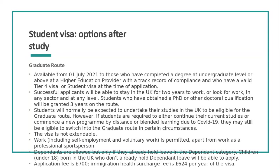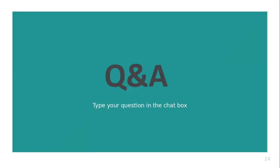That covers the post-study visa options. CARA has made me aware there is another session coming up focusing on other visa routes such as the Skilled Worker route and Global Talent visa, which will give more detail on those categories. We now have about 20 minutes for Q&A — if you have any general questions about the student route, the Doctoral Extension Scheme, or the Graduate Route, please type them into the chat box.